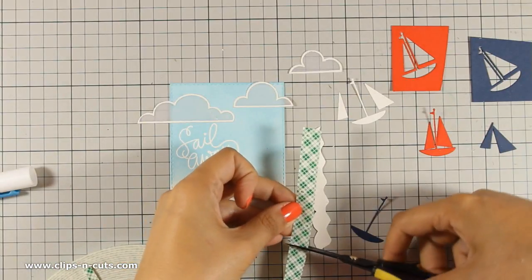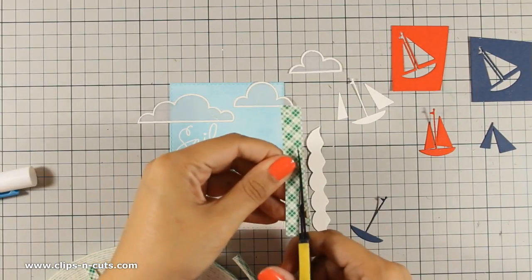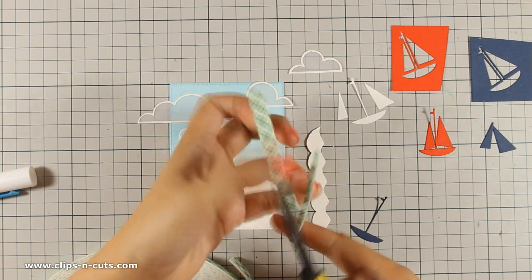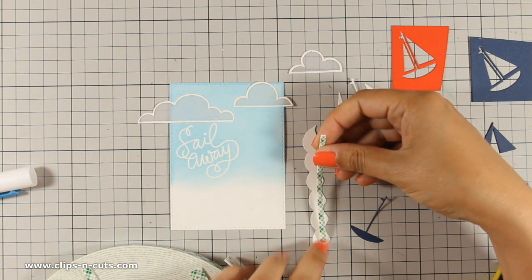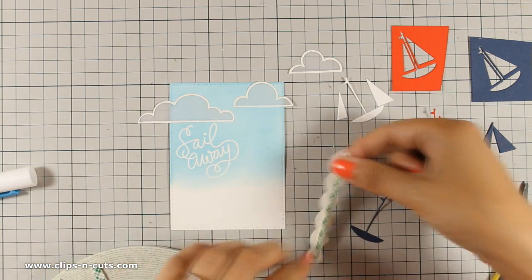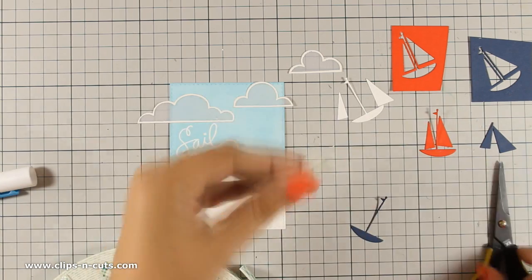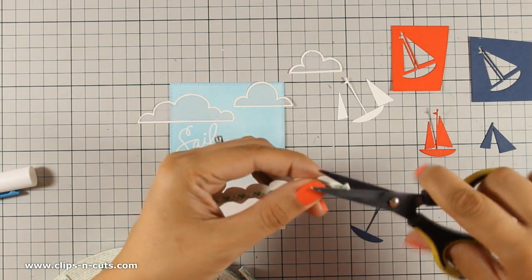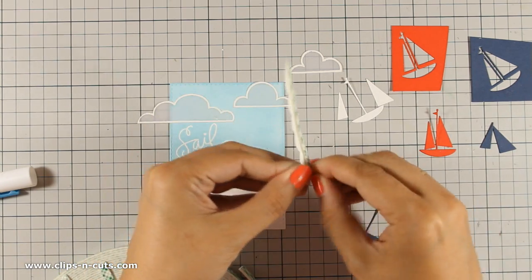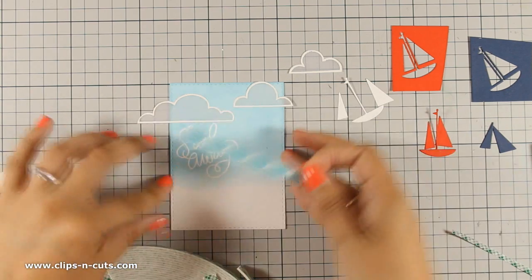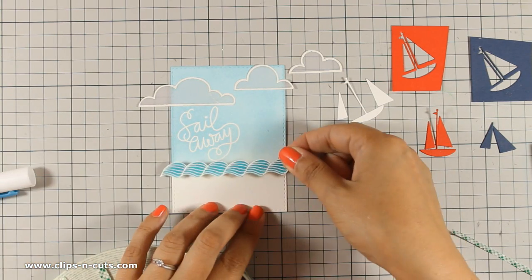To stick the waves in place I am going to use a strip of foam tape and this is going to add just a little bit of dimension on my waves. Now you will see that I am not going to stick them at the very bottom of my panel and that's because I want to add a sentiment there. So I am going to stick them towards the center.